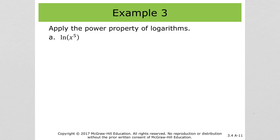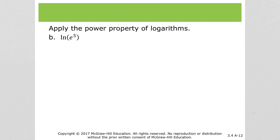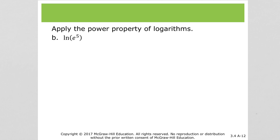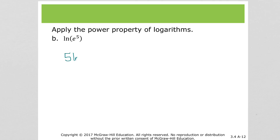On to example 3, the power property. This 5 can be brought out front, so we have 5 times the natural log of x. Same thing here: 5 times the natural log of e. Except the natural log of e is 1, so simplifying all the way, it's actually just 5.